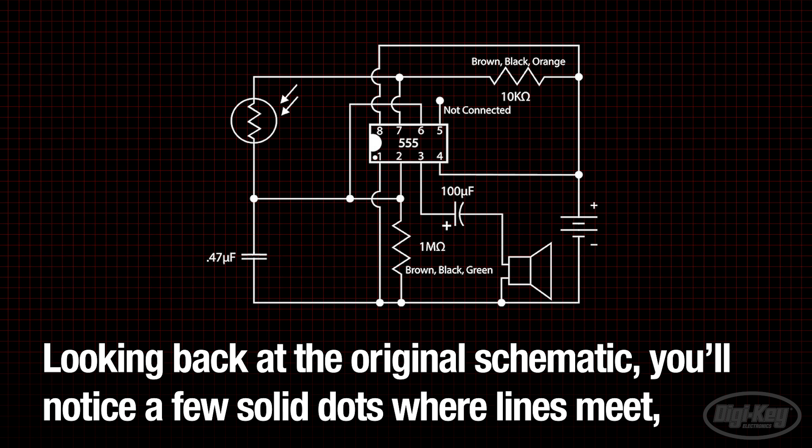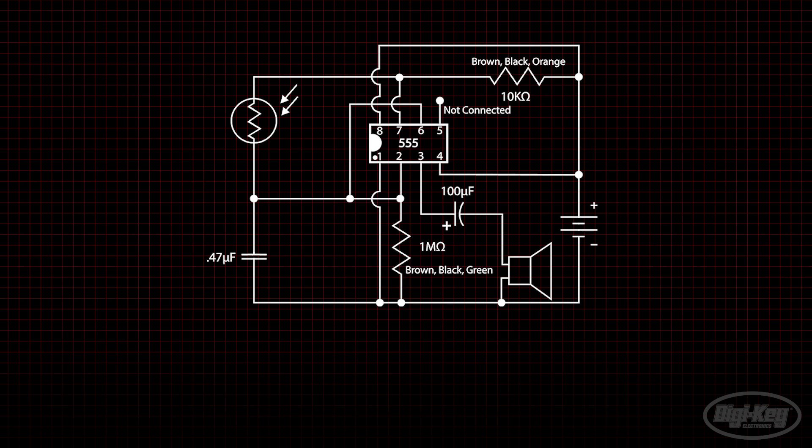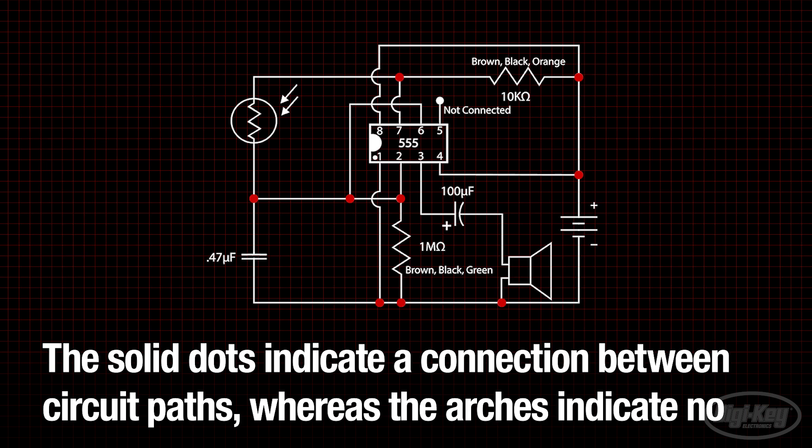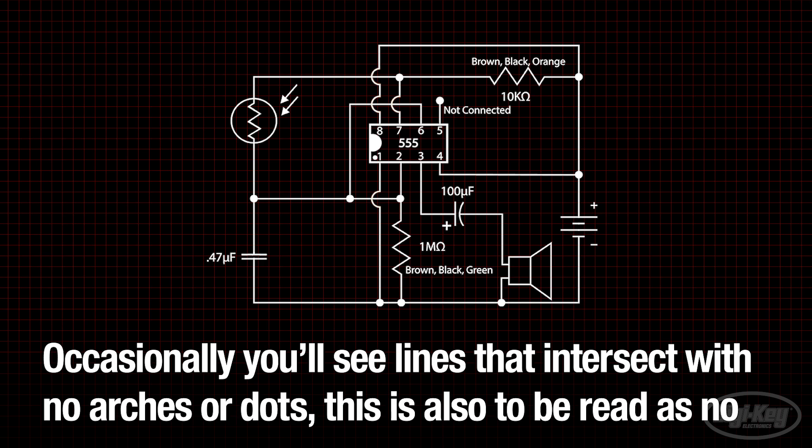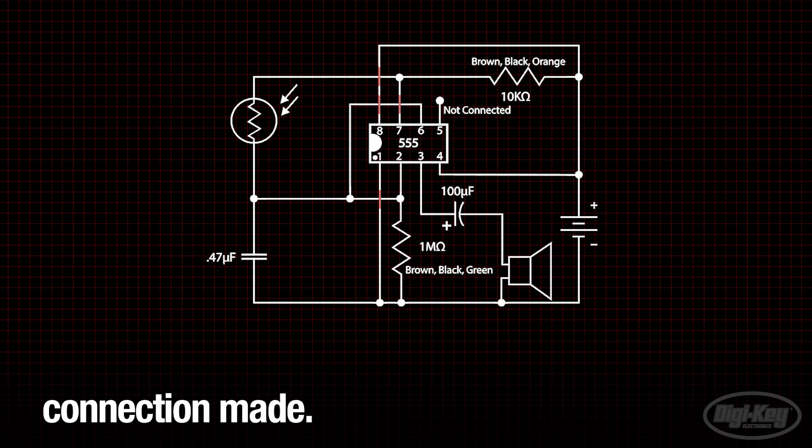Looking back at the original schematic, you'll notice a few solid dots where lines meet, and also a few arches. The solid dots indicate a connection between circuit paths, whereas the arches indicate no connection made. Occasionally, you'll see lines that intersect with no arches or dots. This is also to be read as no connection made.